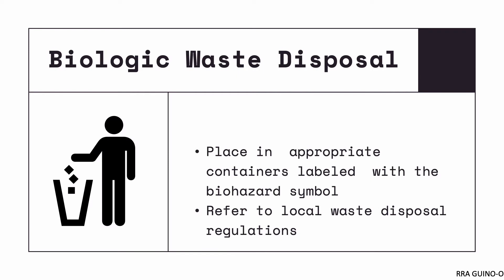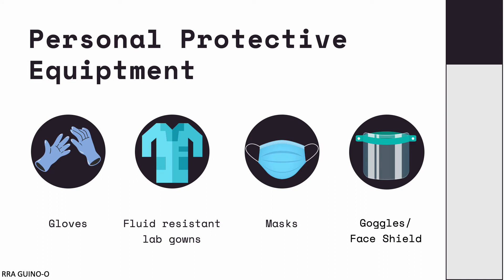For disposing of different biological waste, the first thing to do is place them in appropriate containers labeled with the biohazard symbol. After this, refer to local waste disposal regulations for safe disposal. Some agencies prefer that you incinerate waste on site, or you can outsource to companies that ensure biological hazards are safely disposed. Another way to protect ourselves from biological hazards is through the use of personal protective equipment or PPEs, including gloves, fluid-resistant lab gowns, masks, and sometimes goggles or face shields.